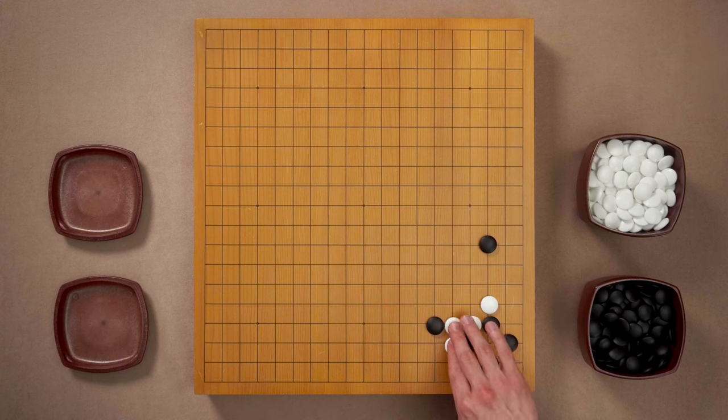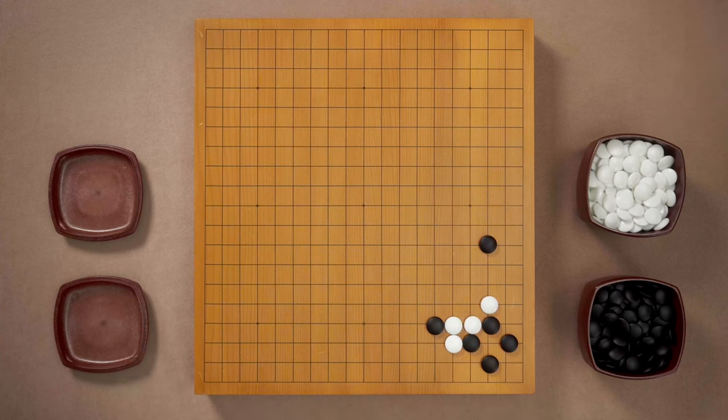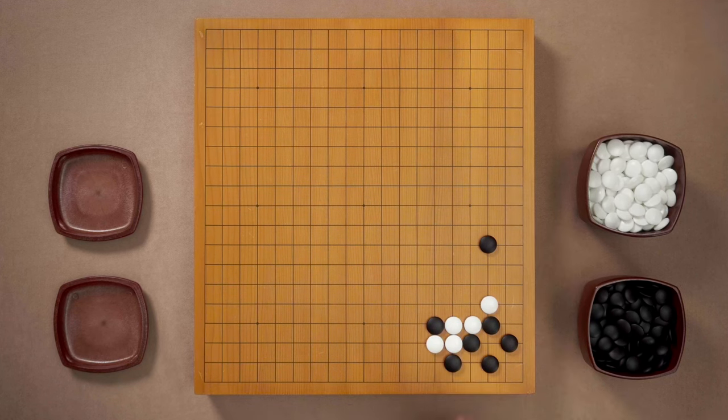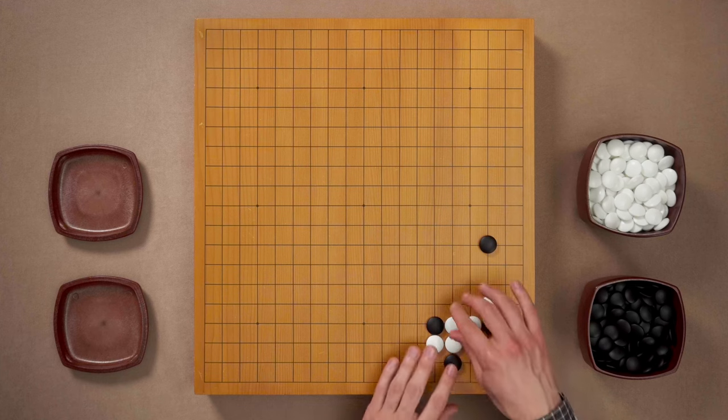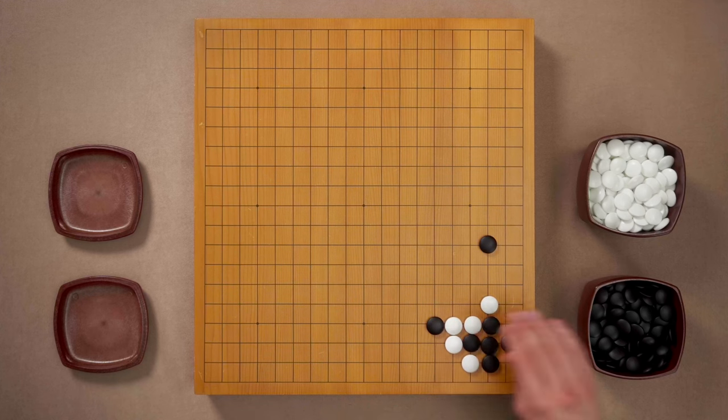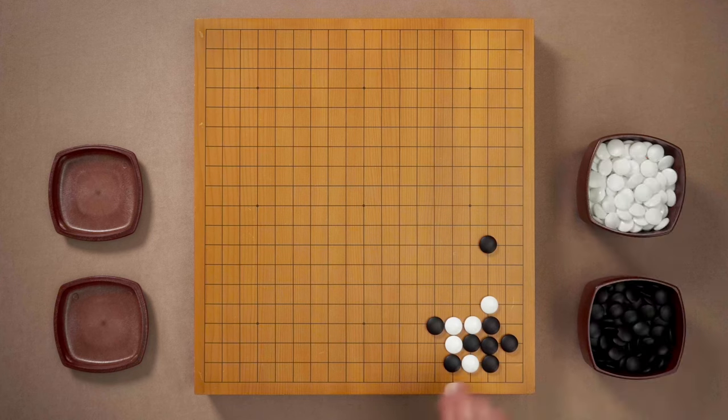If you choose to connect then apparently you are still scared of a ko. After this move black could play hane in sente. However look what happens if you atari first. Black will connect and then you connect your stones. If now black decides to play this move you don't need to extend. You can atari first and block black's expansion to the bottom side.